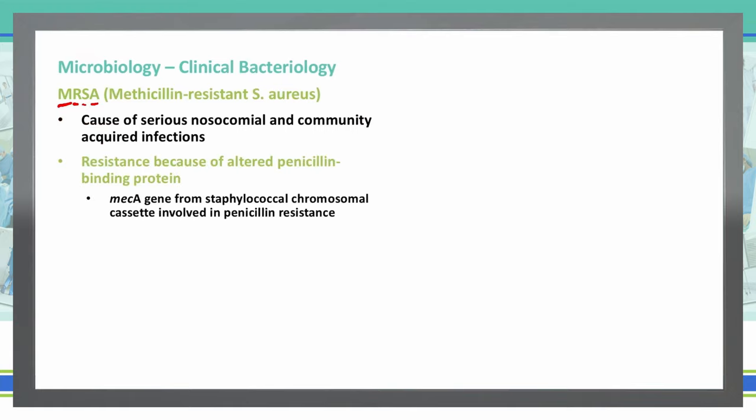Specifically, what's happening with this resistance is that this Staph aureus has acquired resistance by altering the penicillin binding protein. Specifically, it is a change in the mecA gene, which is from the staphylococcal chromosome cassette, which involves the penicillin resistance.